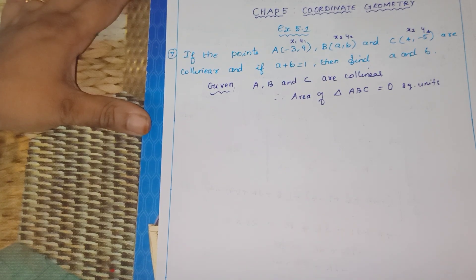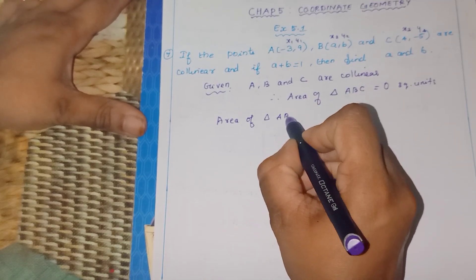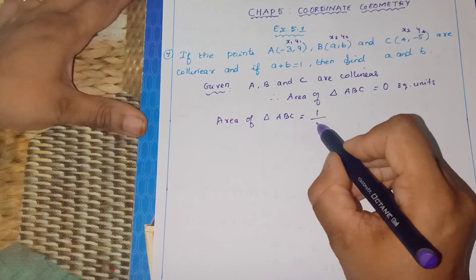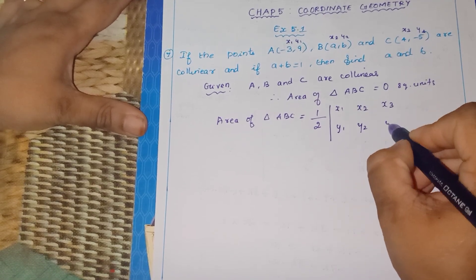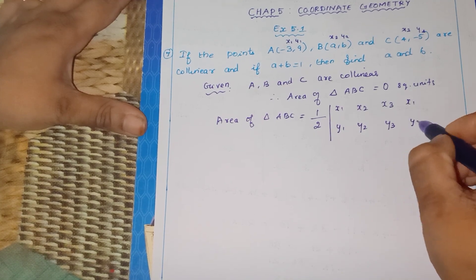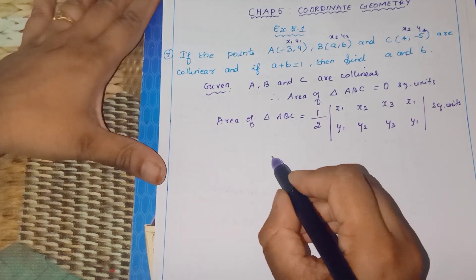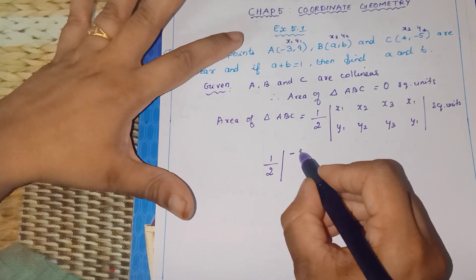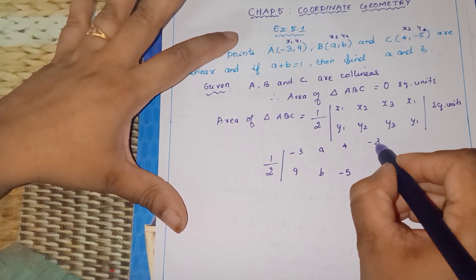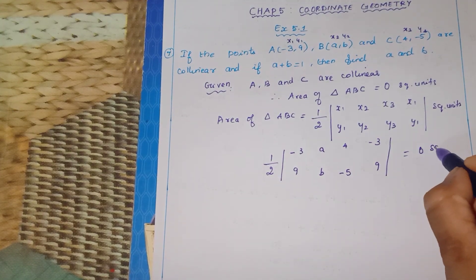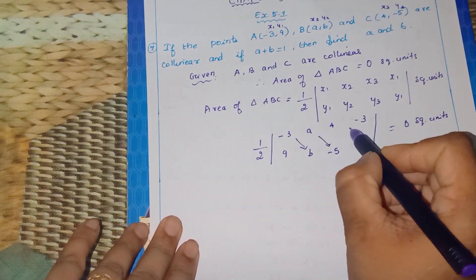We will solve to find A and B. Area of triangle ABC equals half into [x1(y2 - y3) + x2(y3 - y1) + x3(y1 - y2)]. Applying with x1=-3, y1=9; x2=A, y2=B; x3=4, y3=-5. This equals 0 square units because they are collinear.